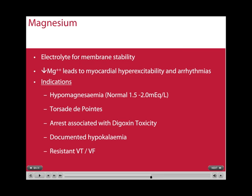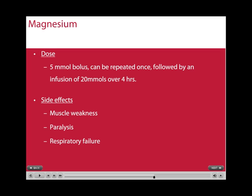Magnesium is also an important electrolyte for membrane stability, with low levels leading to myocardial hyperexcitability and arrhythmias. The indications for giving magnesium include hypomagnesaemia, torsades de pointes, arrests associated with digoxin toxicity, documented hypokalemia, and resistant VT-VF. The dose in an arrest situation is a bolus of 5 mmol, which can be repeated once only, followed by an infusion of 20 mmol over 4 hours. Side effects of rapid magnesium administration include muscle weakness, paralysis, and respiratory failure.